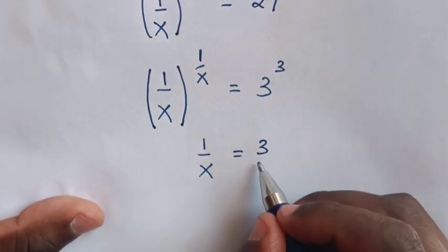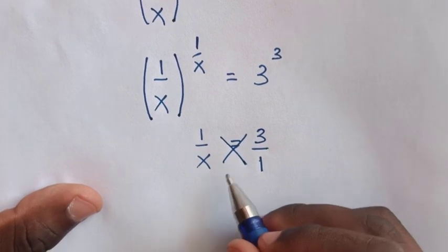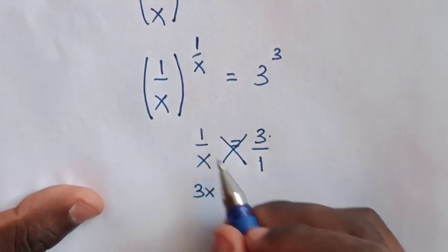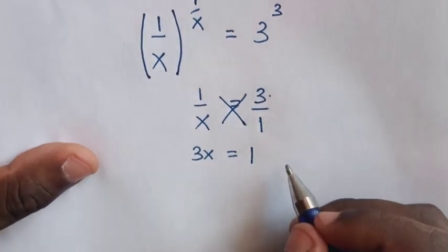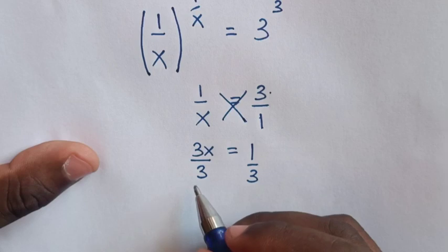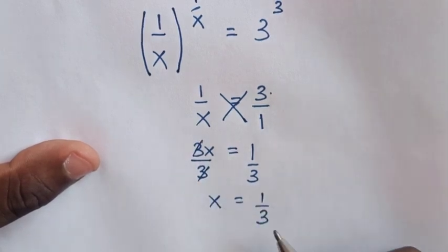This 3 is the same as 3 over 1. Cross multiplying, we get 3x equals 1. Dividing both sides by 3, we find that x equals 1 over 3.